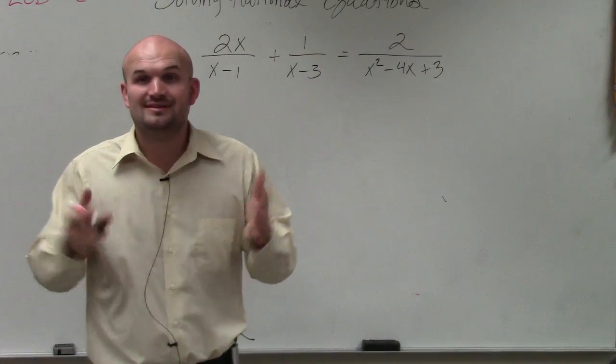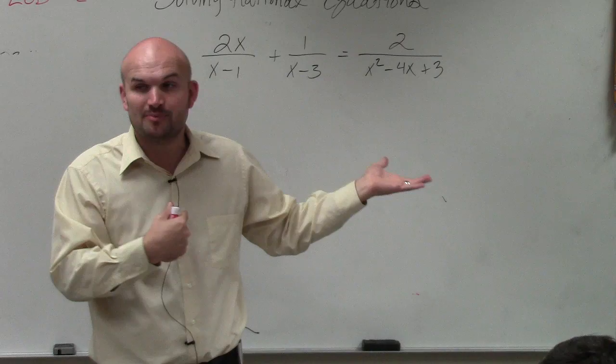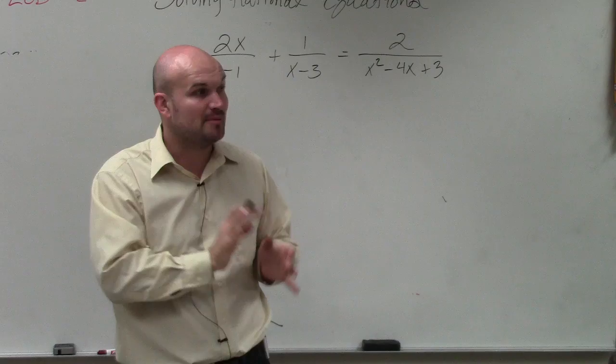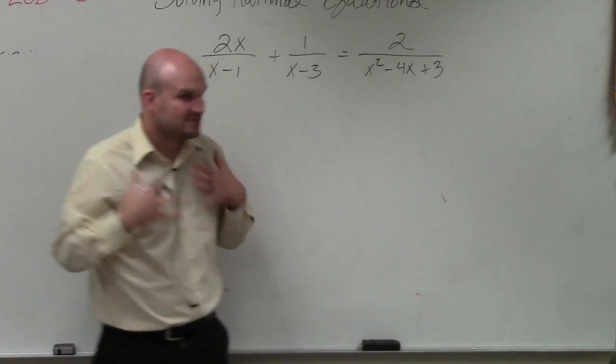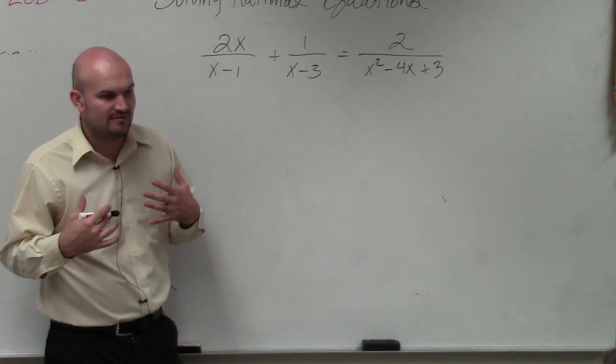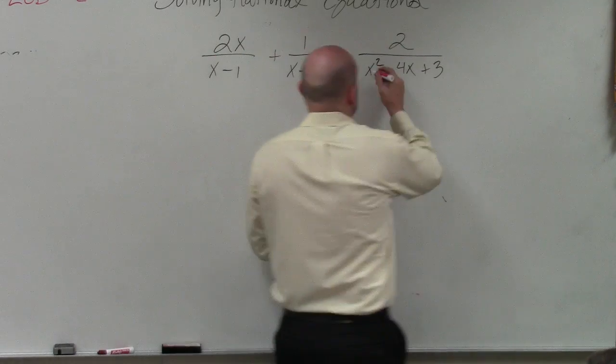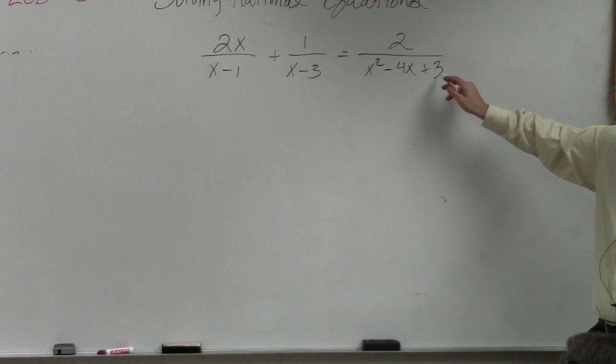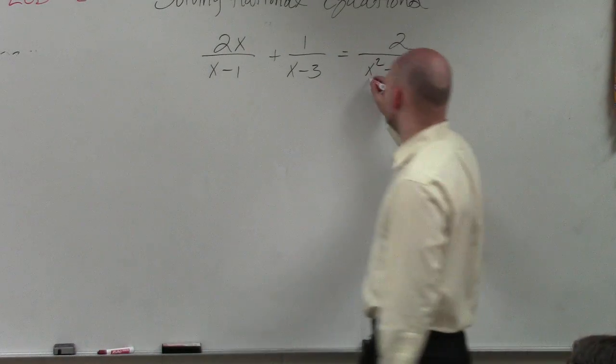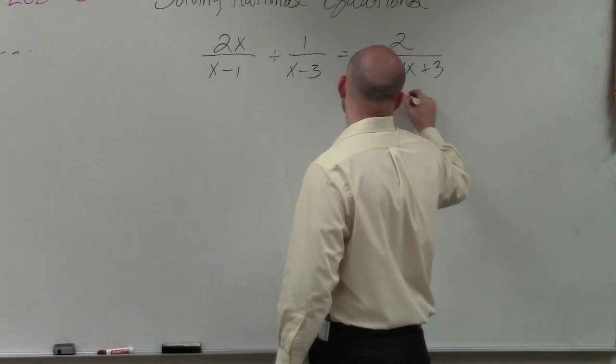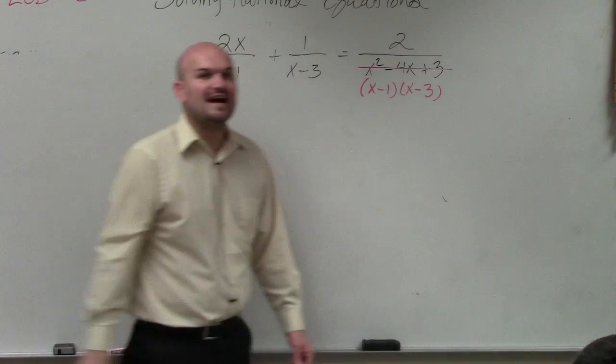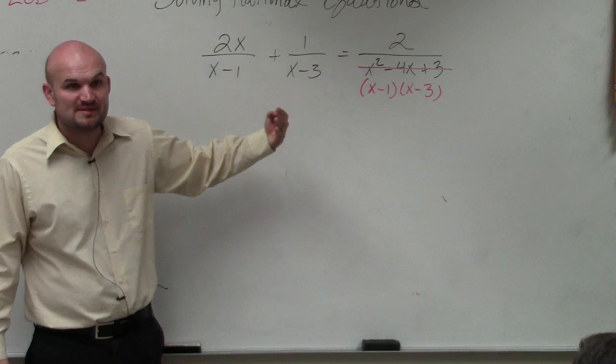So therefore, the same thinking I did on those two problems. I know this says polynomials and so forth, but all we're going to do is multiply by the LCD. But before we do that, we always want to simplify. So you guys can see I can factor this, right? What two numbers multiply to give you 3, add to give you negative 4? Oh, this is actually the same factors.